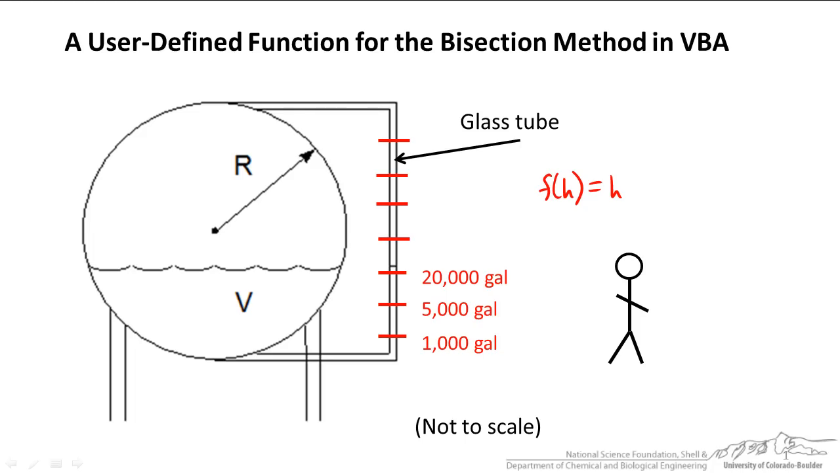The equation for this looks something like this. We are trying to set this equation equal to zero. If we know volume and the radius of this tank, we can solve for the height corresponding to that, where height is just the height in this tube of the liquid.